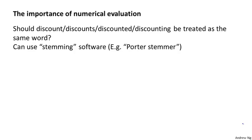I'll talk more about this specific concept in later videos, but here's a specific example. Let's say we're trying to decide whether or not we should treat words like discount, discounts, discounted, discounting as the same word. Maybe one way to do that is to just look at the first few characters in a word — if you just look at the first few characters, you figure out that maybe all of these words have roughly similar meanings.